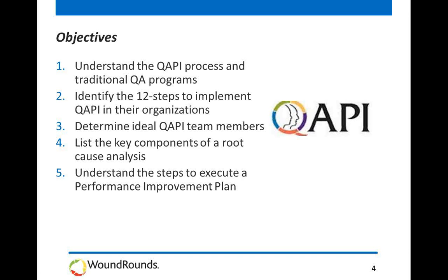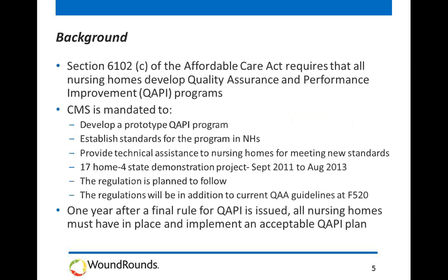Thank you for joining us today. Because we're giving CEUs, we're going to read through our objectives so everyone is clear on what we're going to achieve. First, we're going to understand the QAPI process and how it varies from our traditional quality assurance programs. We're going to identify the 12 steps required to implement a QAPI plan and determine the ideal QAPI team members. We're going to list key components of a root cause analysis, and we're going to understand the steps to execute a performance improvement plan, also known as a PIP.